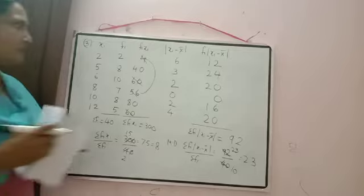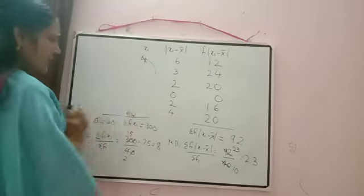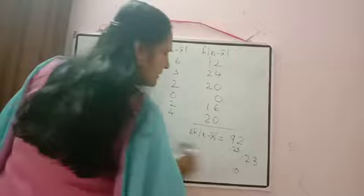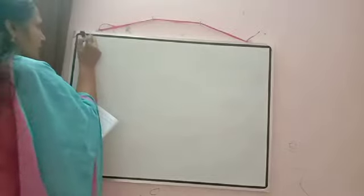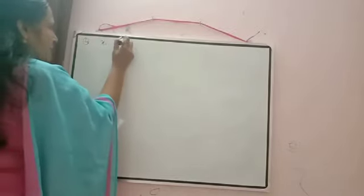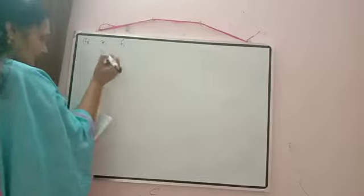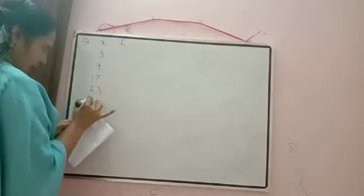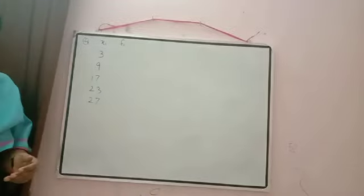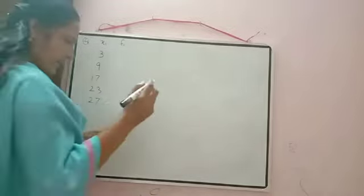Now the next question — same type, so it will be easy for you to clear the concept. Write down the fourth question. xᵢ values: 3, 9, 17, 23, 27. Frequencies fᵢ: 8, 10, 12, 9, 5.